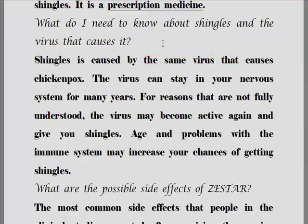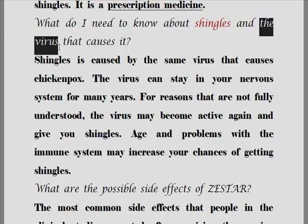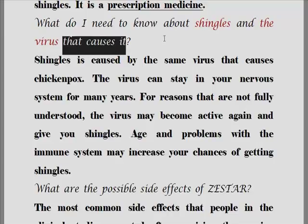What do I need to know about shingles and the virus that causes it? About의 목적어 첫 번째는 shingles이고, 두 번째는 the virus입니다. 이쪽 부분이 바이러스를 수식해 주고 있습니다. 대상포진과 그것을 일으키는 바이러스에 대해서 제가 무엇을 알 필요가 있나요?